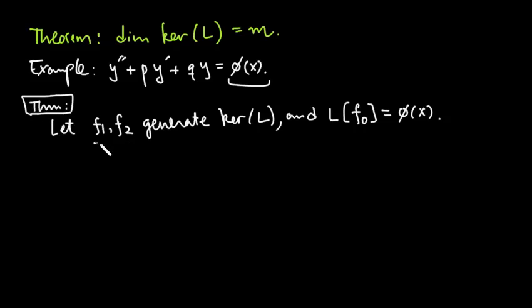Suppose we have f1 and f2, that's the generator in the m equals 2 case here, those two functions in the kernel. And suppose by inspection, by accidentally, whatever the clever method you used, we found one function that goes to phi x. Then we'll write down how all the other solutions to this equation look like with this information. Here's the conclusion.